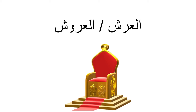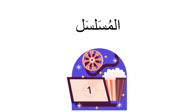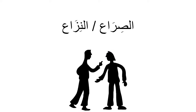First thing, I want you to memorize this list of words. We have العرش, which is the throne. العروش is the plural, thrones. العرش is a seat that belongs to the king — only the king and the king alone is allowed to sit on it. We have المسلسل, it's the series or the TV show. الصراع — we can also say النزاع — and it means the conflict.